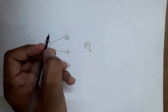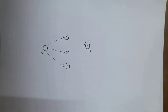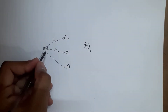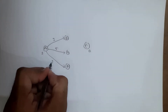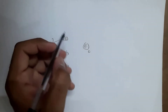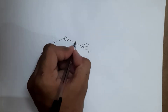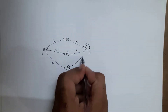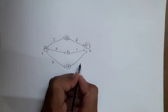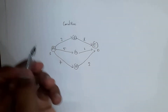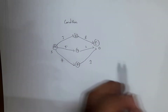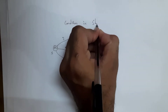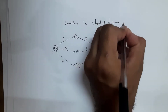From A to B the distance is 3 kilometers, from A to C the distance is 5 kilometers, and from A to D the distance is 7 kilometers. From node B to E the distance is 1 kilometer, from C to E the distance is 2 kilometers, and from D to E the distance is 3 kilometers. The condition is to travel from source to destination in the shortest distance.